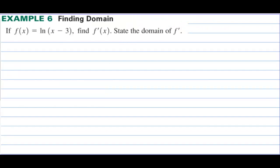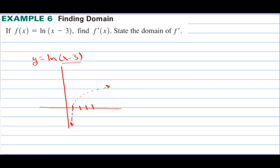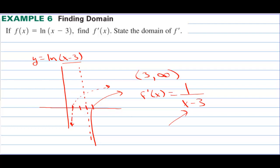Example 6, finding domain: if f of x equals natural log of x minus 3, find the derivative and state the domain. The natural log graph crosses through 1 and rises, but with the transformation x minus 3, it shifts 3 units right — through the point (4, 0) — and the vertical asymptote also shifts to x equals 3. The graph doesn't exist to the left of 3, so the domain of the original function is (3, infinity). The derivative is 1 over (x minus 3). Although the denominator alone would suggest x cannot equal 3, since the original function doesn't exist to the left of 3, the domain of the derivative is also (3, infinity).